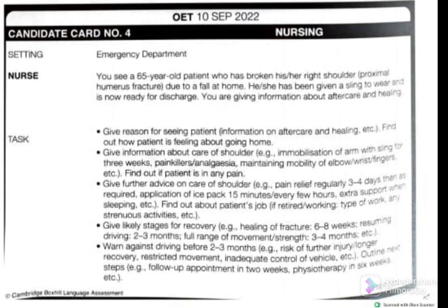Explain to the patient that she is currently in restricted movement, meaning she has inadequate control of a vehicle, so driving poses a risk. Advise her to arrange alternative transportation in the meantime. Then outline the next steps: 'You will have a follow-up appointment in two weeks, and physiotherapy will be initiated in six weeks.'